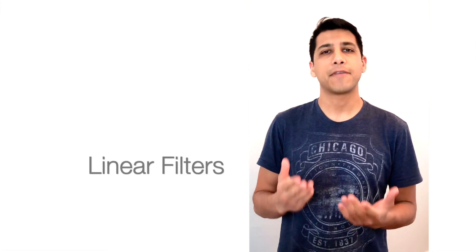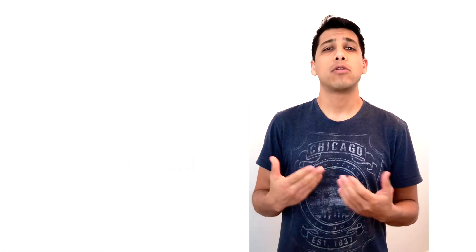Okay, in this video, we talked about linear filters. We defined convolution and different types of kernels, and that we can change the shape of a kernel to obtain different results. See you in the next video.